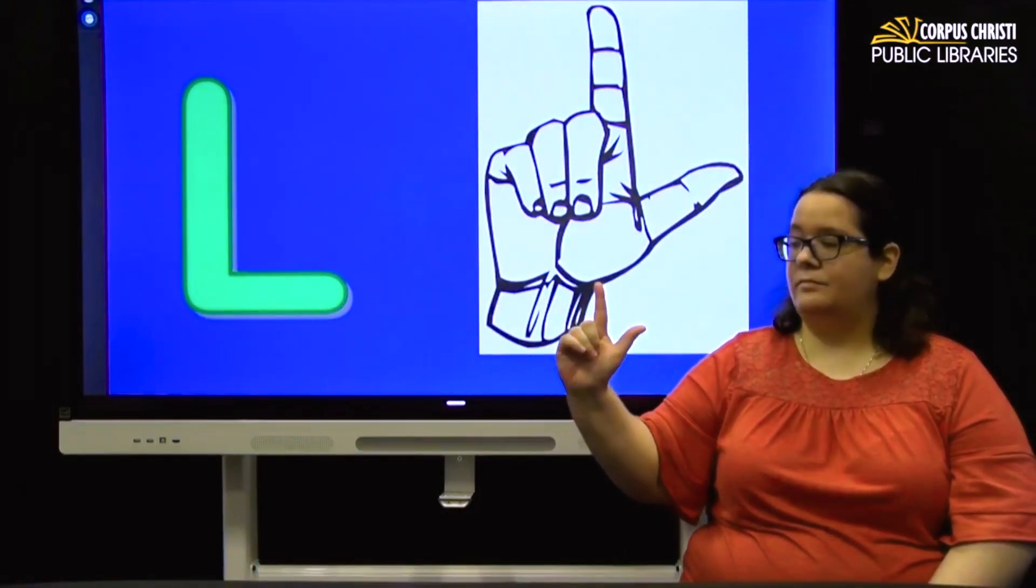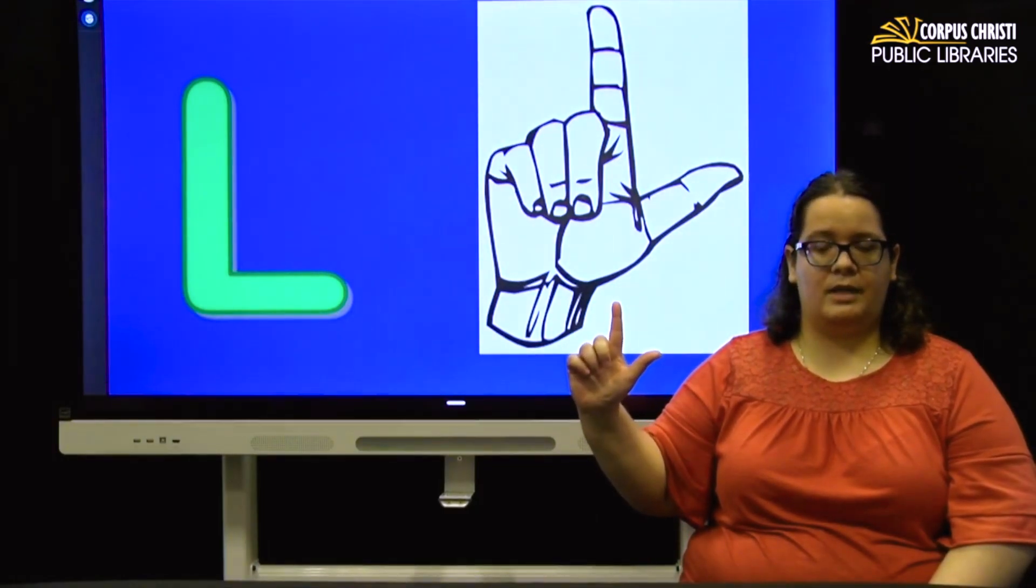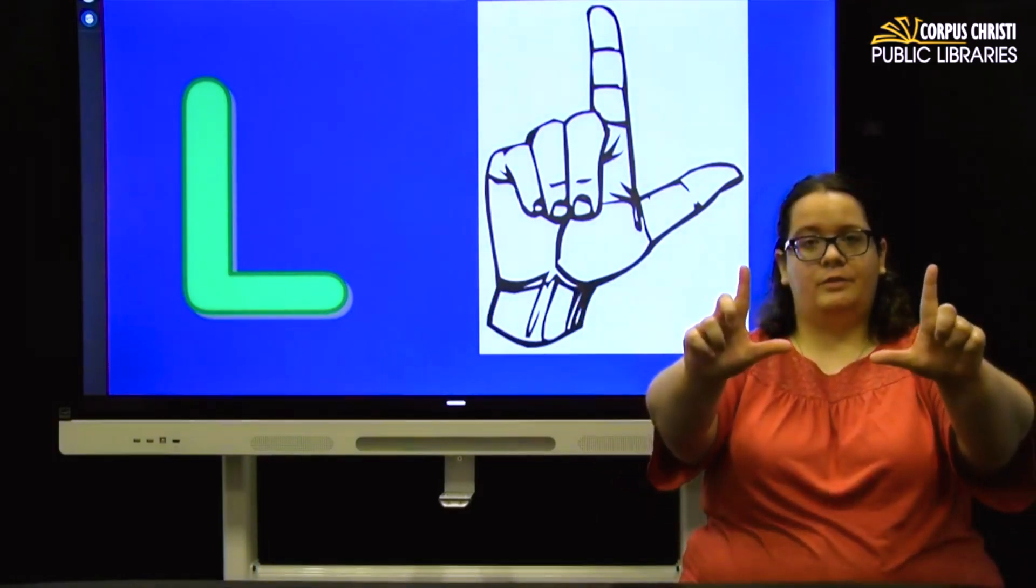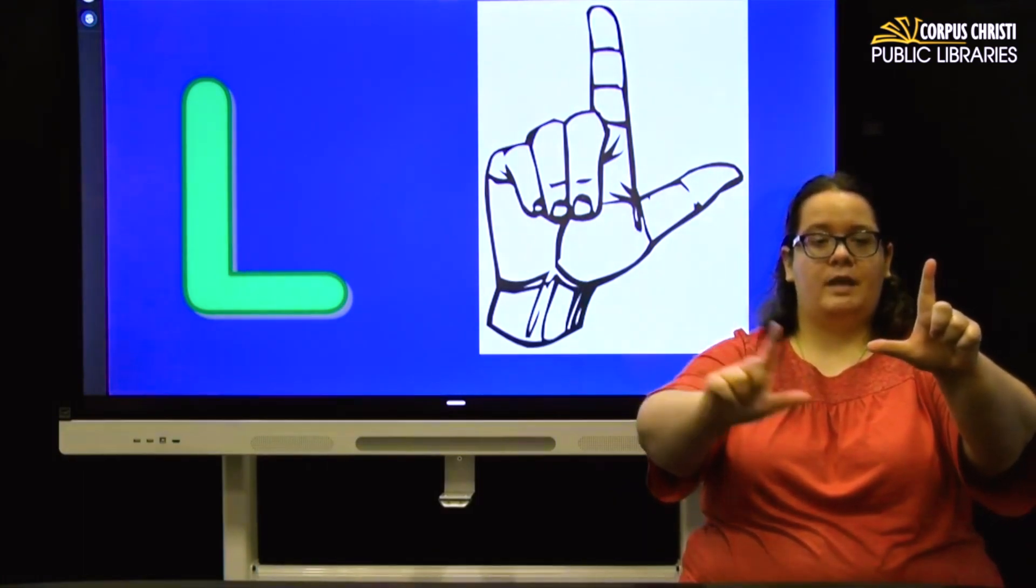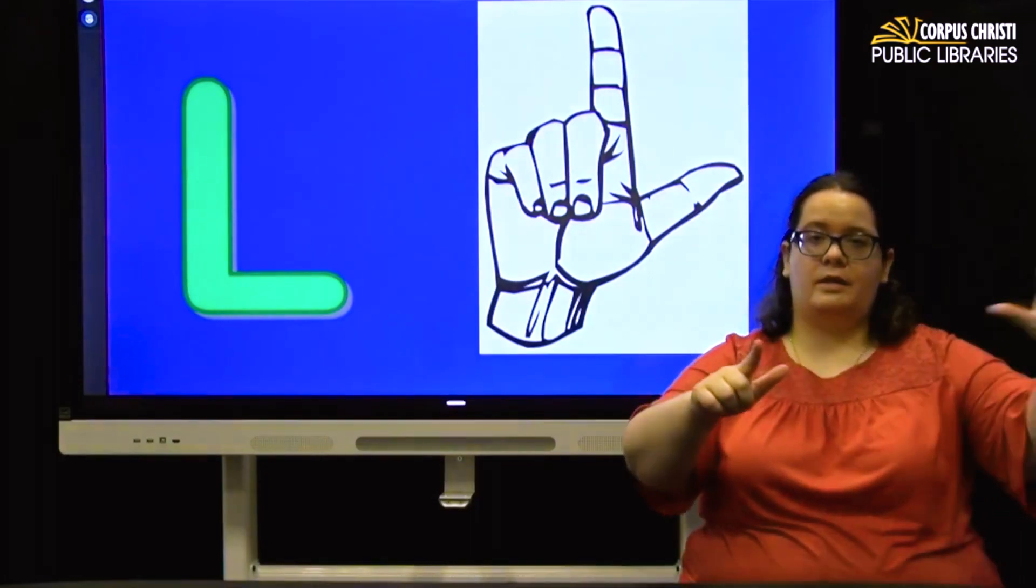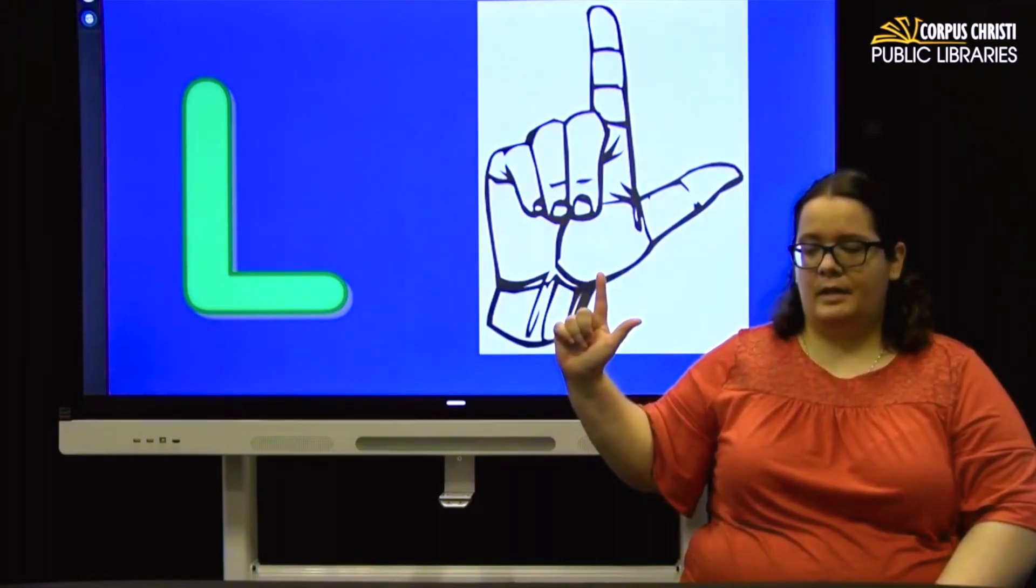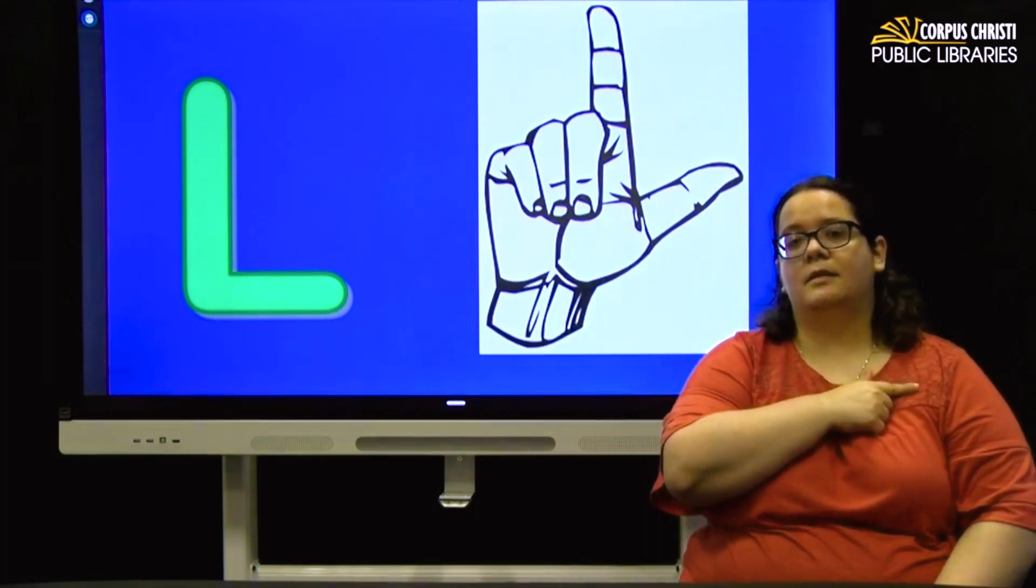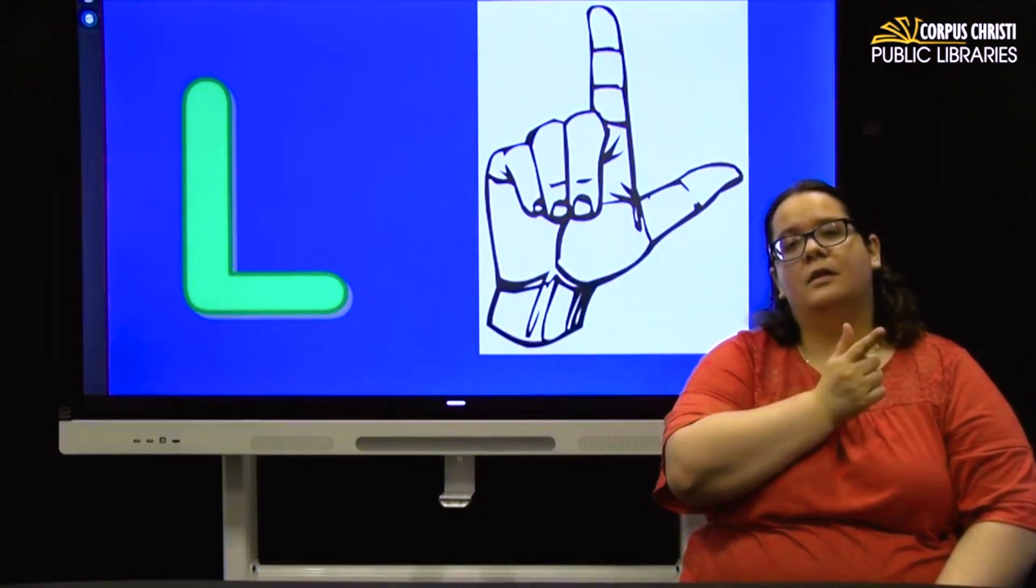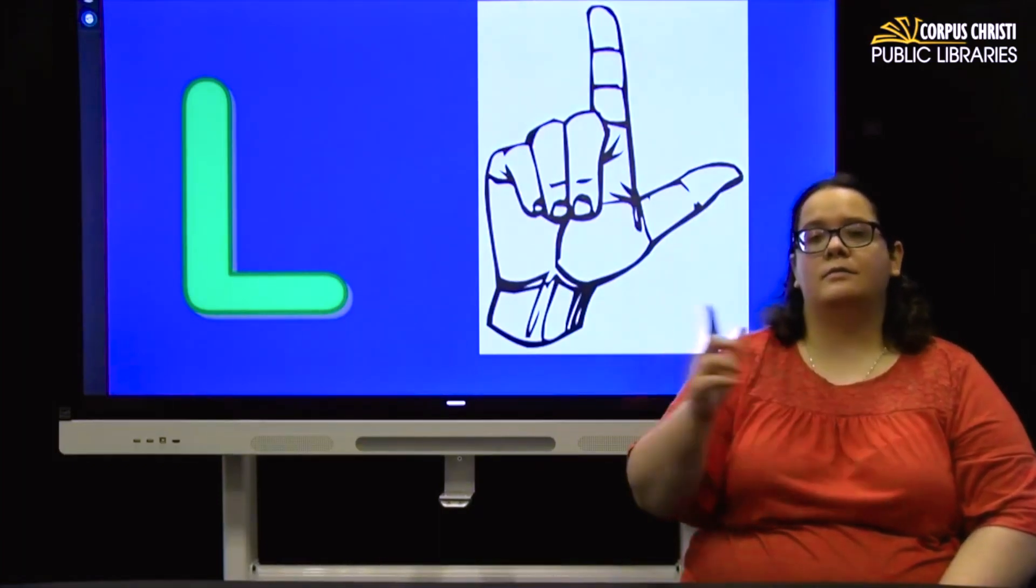L. Again, we're back to a fairly self-explanatory one. You've probably all done this at some point in your life. You might have used the two L tricks, learning your left and right. Remember the L that is the right way is your left L. And so you can use this for a sign like lazy. And for that, you just take your L and just lazily tap it on your chest. Feeling lazy today. I'm tired. L.